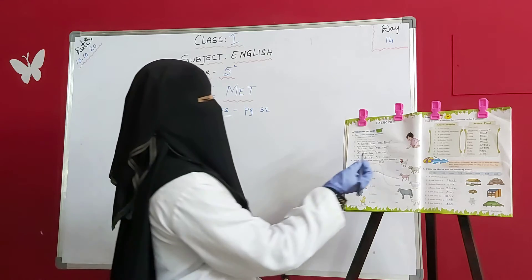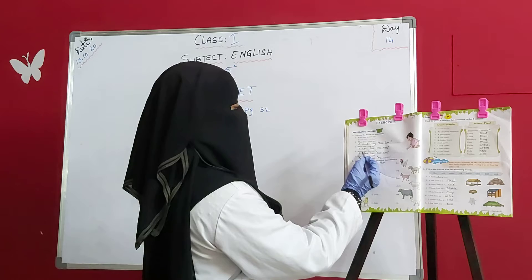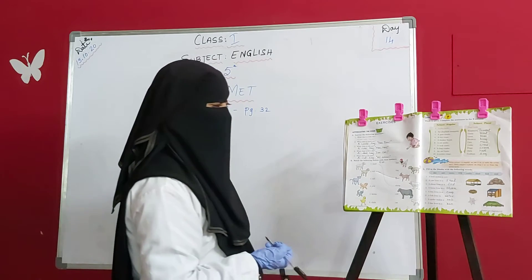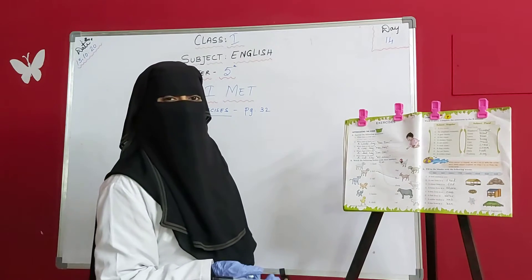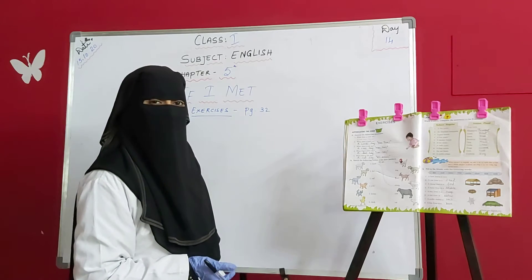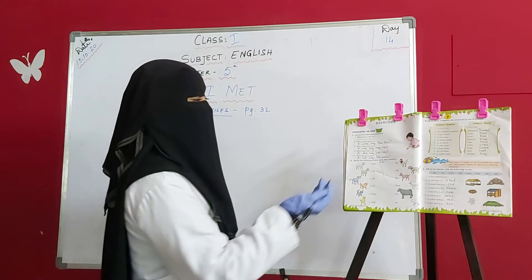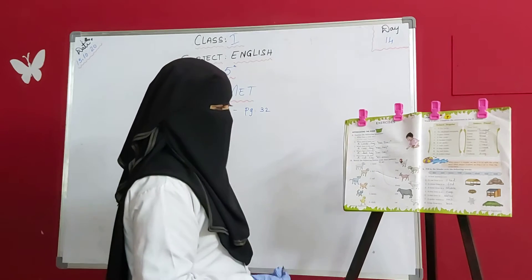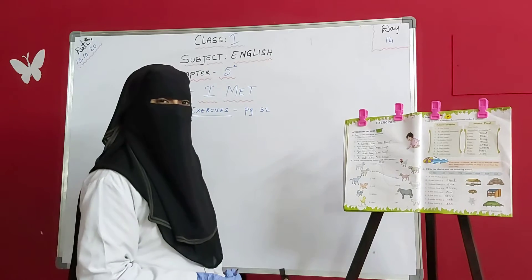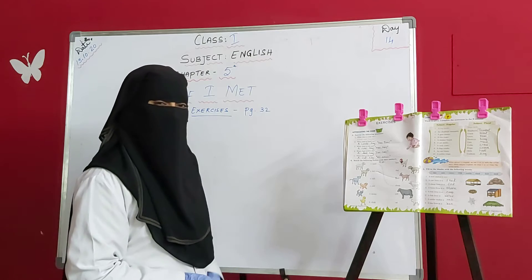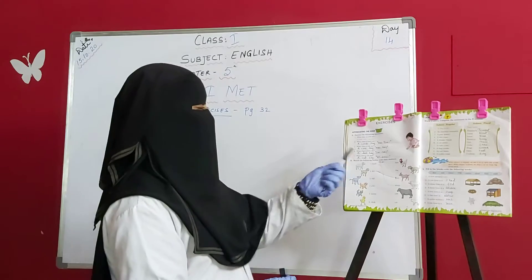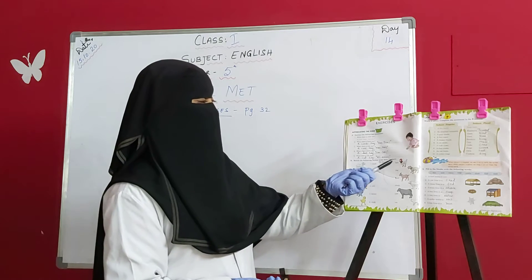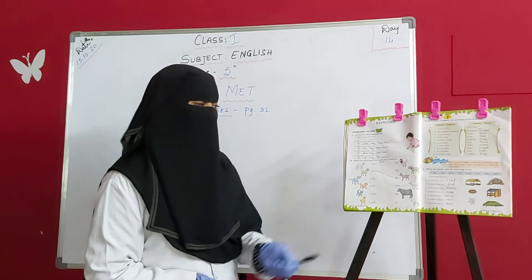What does a cow say? A cow says moo moo. Next one, what does a dove say? Dove means cuckoo, so a dove says coo coo. Next one, what does a cat say? A cat says meow, we all know.